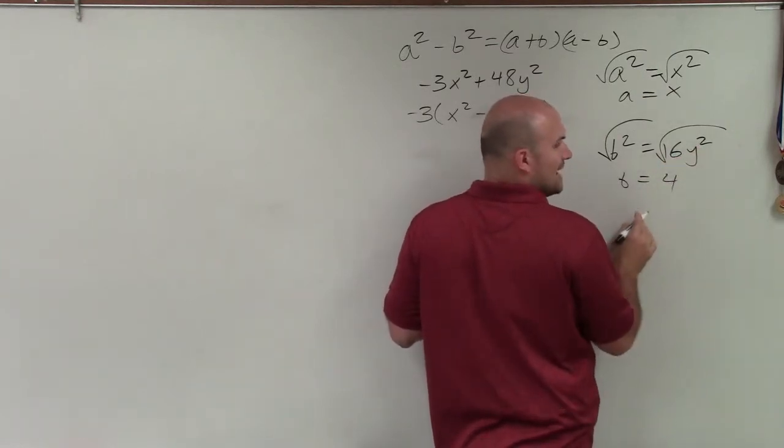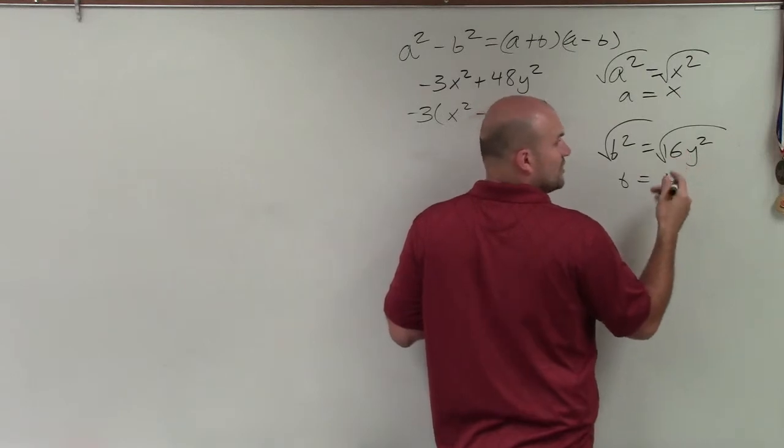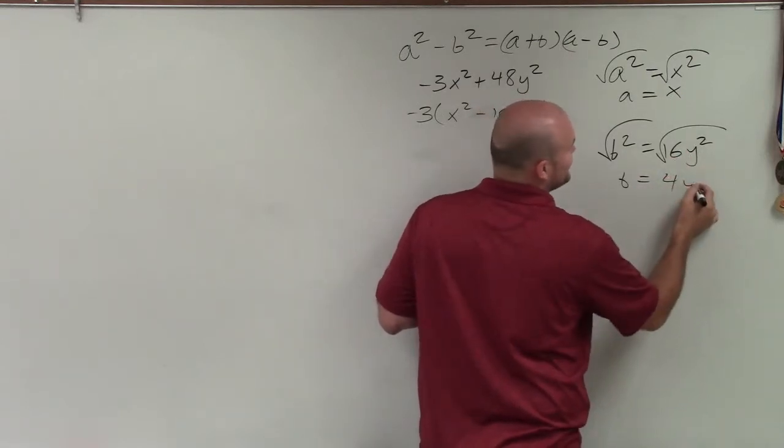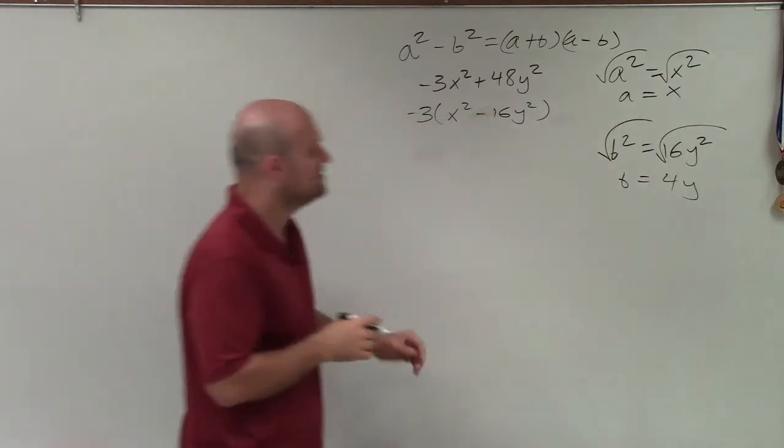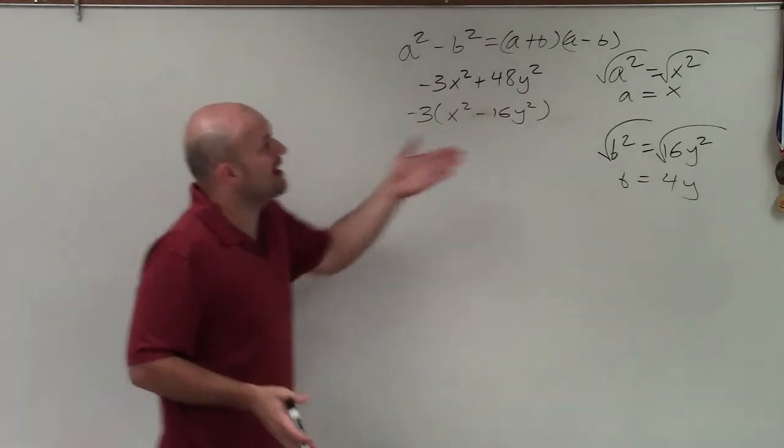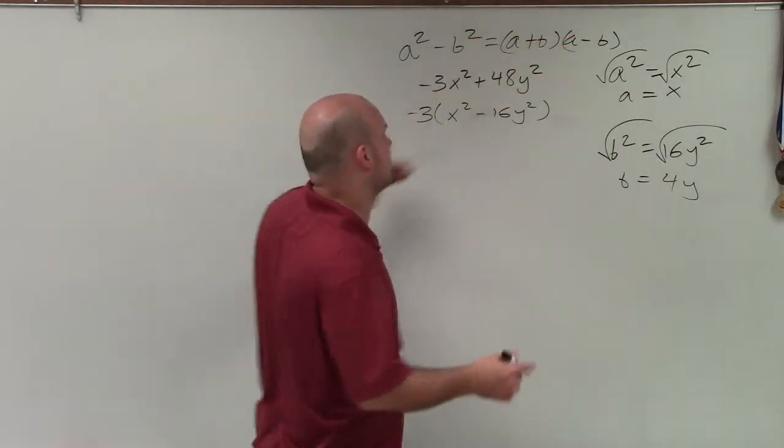because you can take the square root of 16, which is 4, and the square root of y squared, which is just y. So therefore, now we know what a and b are. I can just kind of plug them into the formula to write this out.